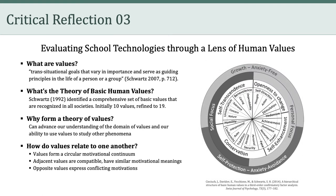Notably, Schwartz and colleagues argued that human values form a circular motivational continuum. Accordingly, any adjacent values, such as conformity, humility, and tradition, are compatible and have similar motivational meanings. On the other hand, opposite values, such as humility and hedonism, express conflicting motivations. In this class, we can use a theory of human values like this one — there are many others — to help us evaluate specific educational technologies, such as the ones you explored in Critical Reflection 3.